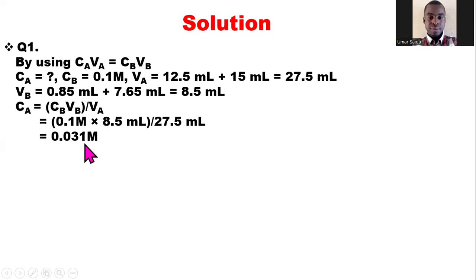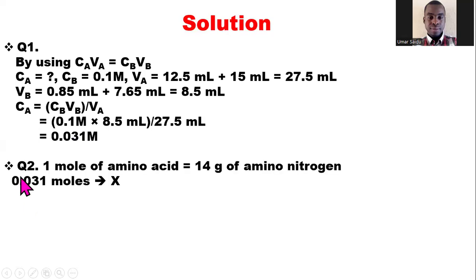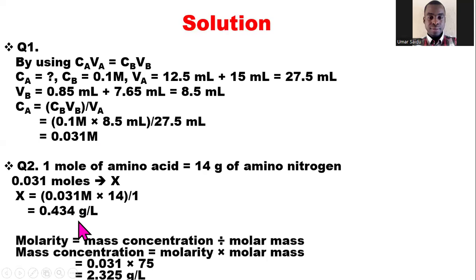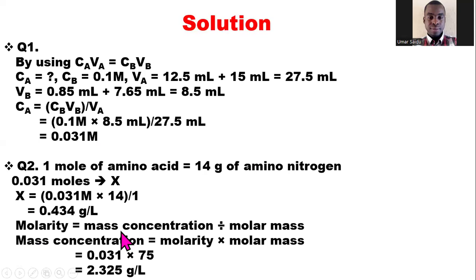For question two, we calculate the concentration of amino nitrogen in grams per liter. One mole of amino acid contains 14 grams of amino nitrogen. So 0.031 moles will contain x grams, where x = 0.031 × 14 / 1 = 0.434 grams per liter of amino nitrogen.